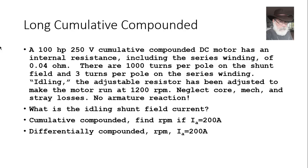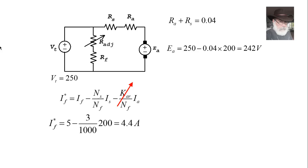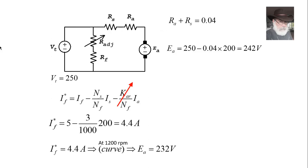For differential (subtractive) composition under the same conditions, Ea is still 242 volts, but the series coil contribution is subtracted: IF* = 5 − (3/1000) × 200 = 4.4 amperes. Interpolating at 4.4 A gives 232 volts at 1200 RPM. Comparing 242 V to 232 V, the actual speed is 1251 RPM. With differential compounding, higher armature current tends to speed up the machine.